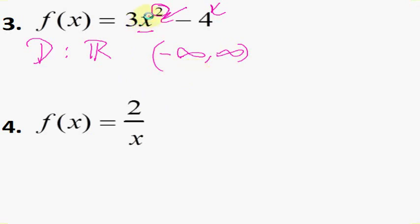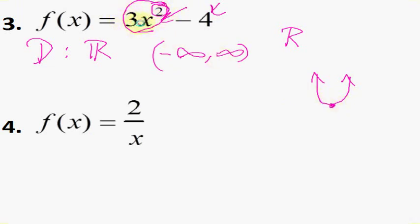All real numbers means going from negative infinity to positive infinity — that includes all x's. For the range, you have to understand that this polynomial is a quadratic. When you graph it, it looks like a parabola with a minimum value. Since we're squaring x, this term is always 0 or bigger — it can never be negative. So the minimum value is 0, and 0 minus 4 is negative 4. The range starts at -4 and goes up to infinity: [-4, ∞).